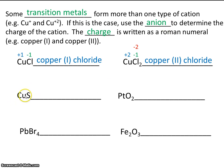Copper sulfide. Well, copper is a transition metal, so we need to say the charge. Let's use the anion to help us. The anion is sulfide, which has a charge of minus 2. So copper must be plus 2, so the name of this compound is copper (II) sulfide.